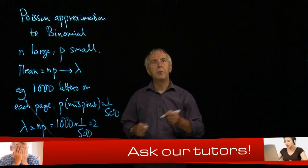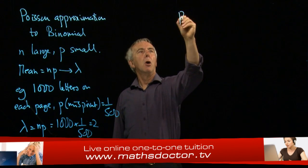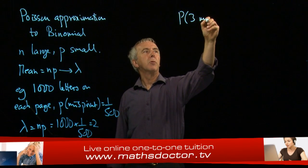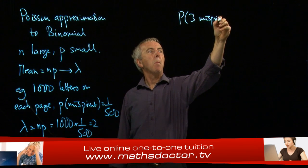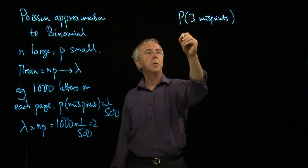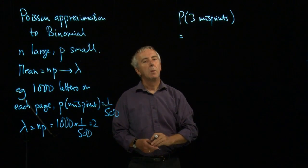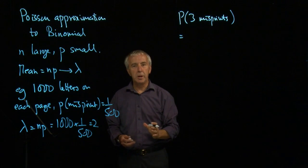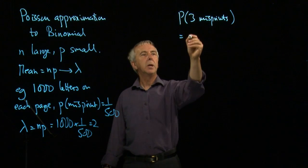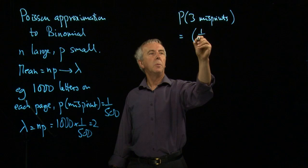So let's work out the probability of three misprints on a page. Well, the correct answer, the exact answer, is the chance of a misprint cubed, because we want three of them.